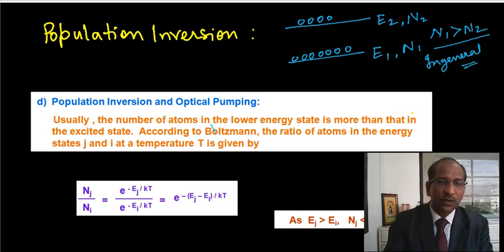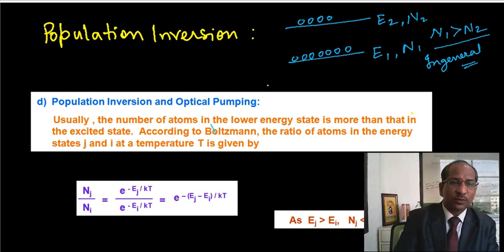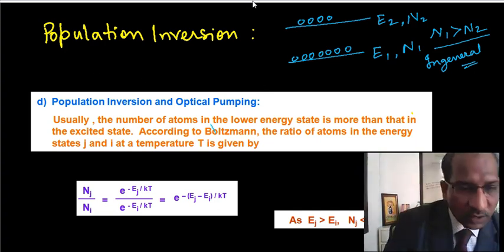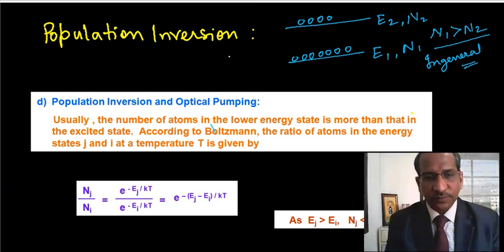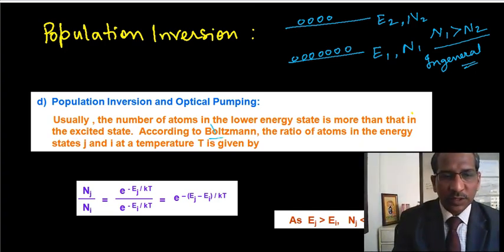So usually the number of atoms in the lower energy state is more than that in the excited state. And now what is the Maxwell Boltzmann distribution law? This law actually, here Boltzmann distribution law.